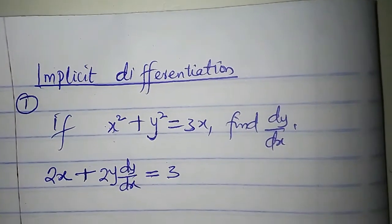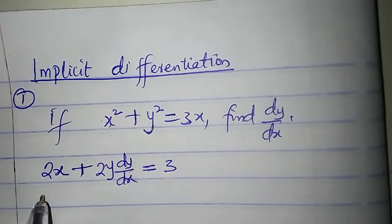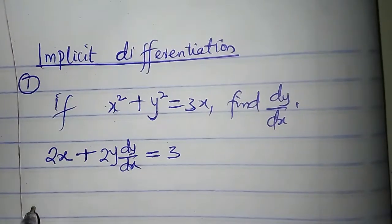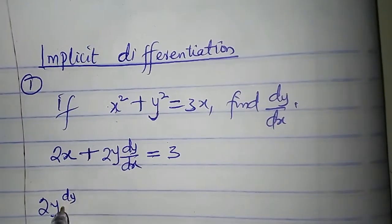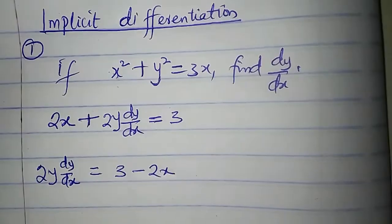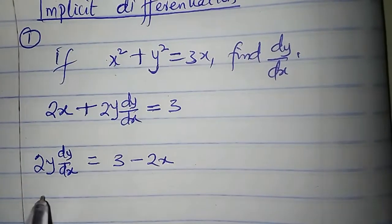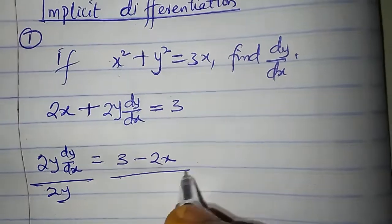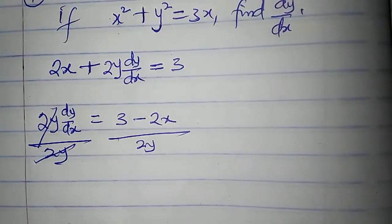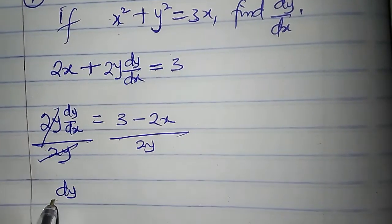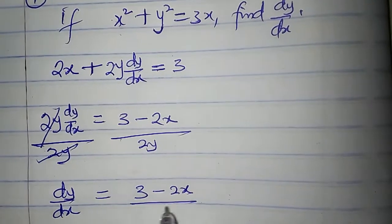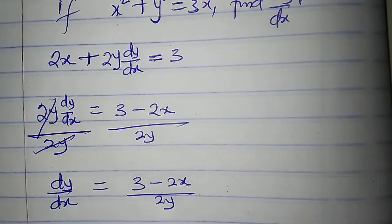I will make dy/dx the subject of the formula. If I take 2x to the other side, I'll have 2y times dy/dx equal to 3 minus 2x. Dividing both sides by 2y, therefore dy/dx is equal to (3 minus 2x) all over 2y.